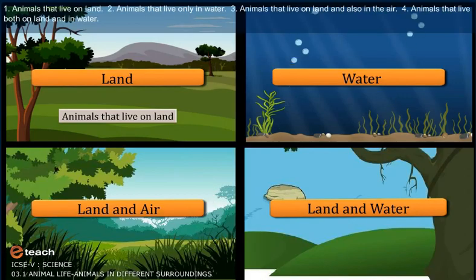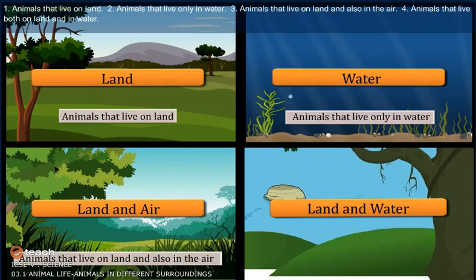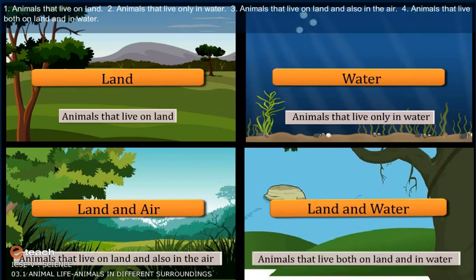1. Animals that live on land. 2. Animals that live only in water. 3. Animals that live on land and also in the air. 4. Animals that live both on land and in water.